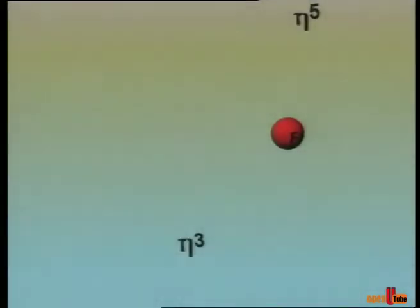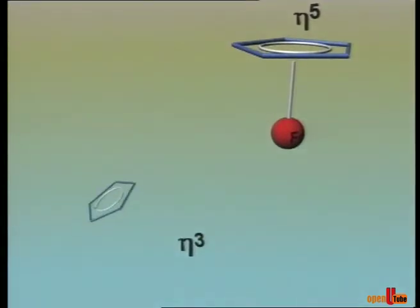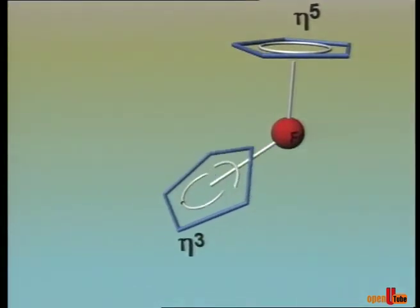Eta-5 cyclopentadienyl ligand combines through all the carbon atoms. Eta-3 cyclopentadienyl ligand connects through three carbon atoms. There is only one carbonyl ligand.